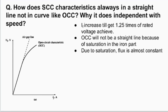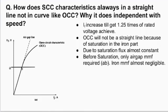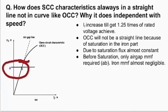Before saturation, AB is the straight line representing field current. In this region, flux only encounters reluctance from the air gap. The field current is utilized entirely to produce air gap flux and air gap MMF. Before saturation, iron MMF is almost negligible.